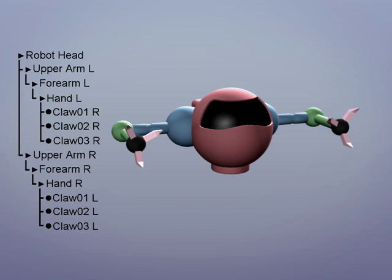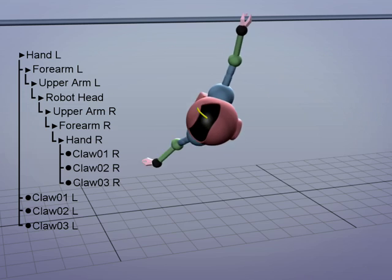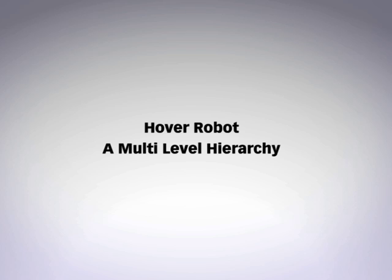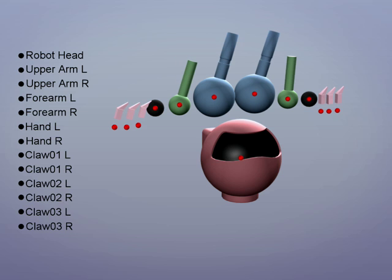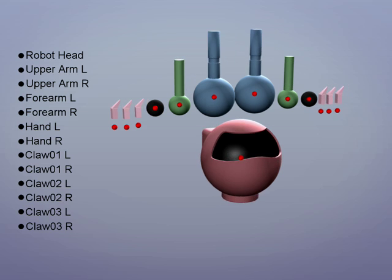In this tutorial we'll organize a hierarchy for a hover robot. There's two examples, one for flying and one for swinging. Here are some parts of a hover robot. Take note where the pivots are on each object. These pivots will be on the rotation points for each part. Let's arrange the parts into better positions.